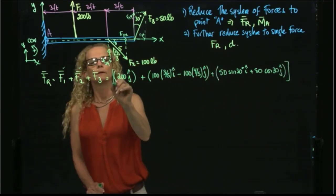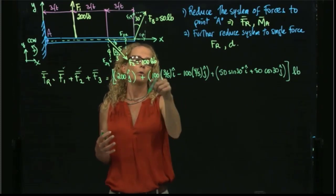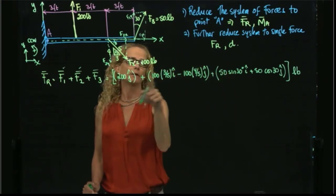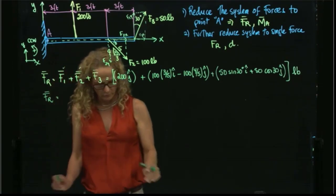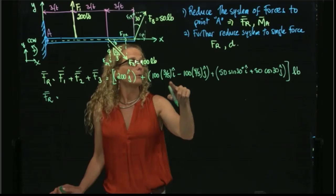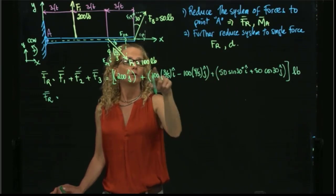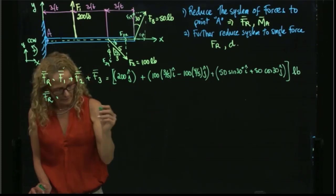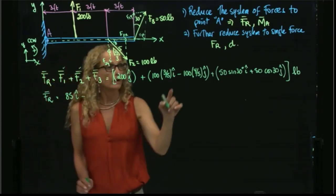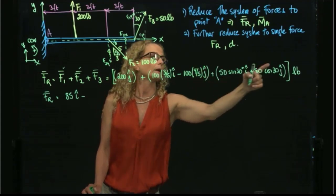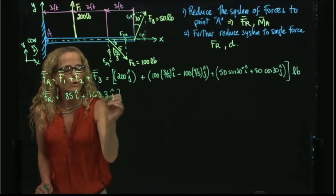All forces are in pounds. To find the resultant, we add all I components and all J components. Sine of 30 is 1/2, so the I components give 25 plus 60 equals 85 in I. The J components sum to 163.3 in J. So the resultant force is 85I plus 163.3J pounds.